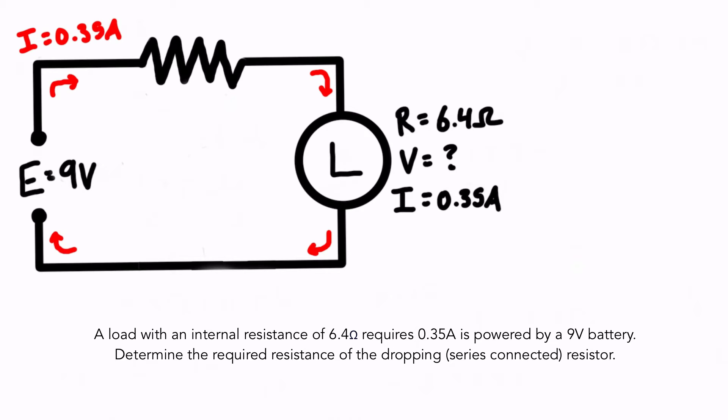So for our resistor here we have resistance, we have the voltage drop, and we also have the current. We know that the current is going to be the same everywhere in the circuit, so the current has to be 0.35 amps. At the moment we don't know what the voltage drop is going to be and we don't know what its resistance is going to be. The goal of the question is to find out what is the resistance of the dropping resistor. We have to make sure that we select the correct amount of resistance in this resistor so that we get 0.35 amps.